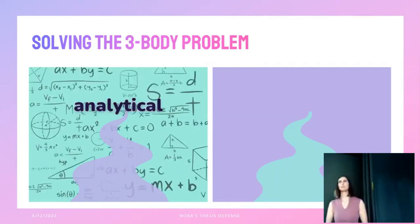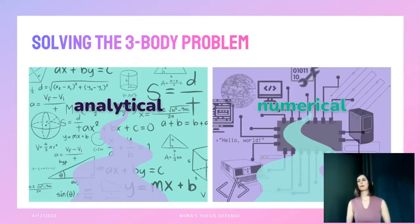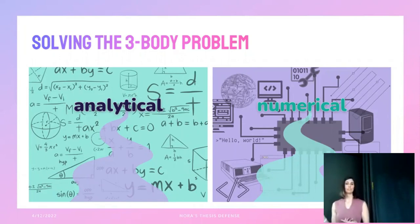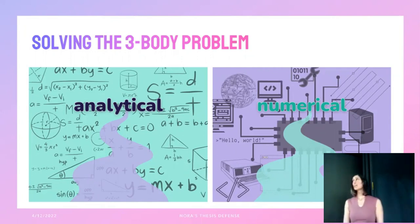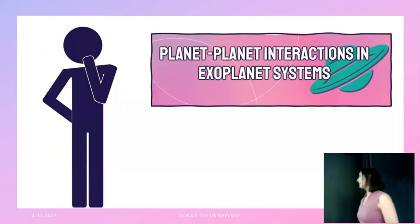Analytical approximations were the name of the game for many centuries because there were no computers. But nowadays computing power is cheap and abundant, so we can use numerical methods more than ever. Both methods are quite important — not just for the three-body problem, but for the n-body problem, where you can have as many planets as you like.